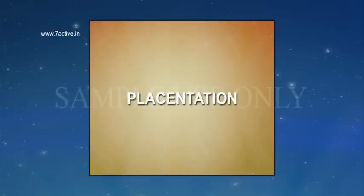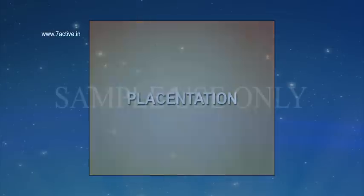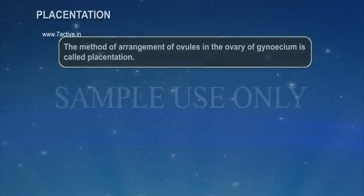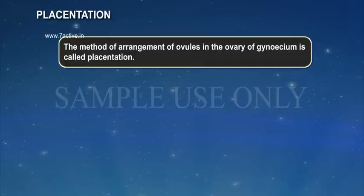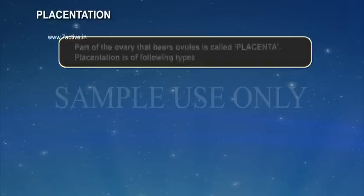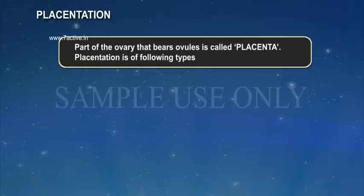Placentation. The method of arrangement of ovules in the ovary of gynoecium is called placentation. The part of the ovary that bears ovules is called placenta. Placentation is of the following types.